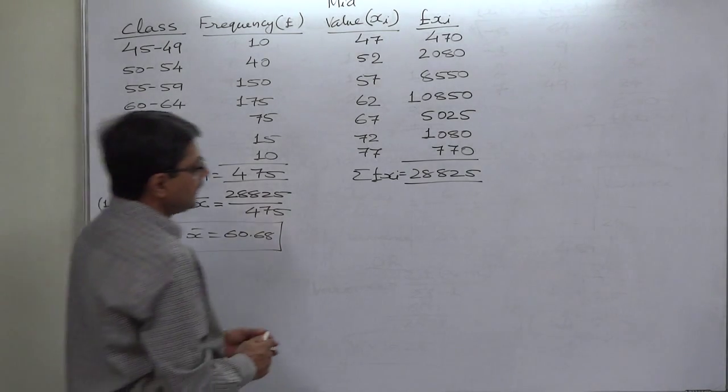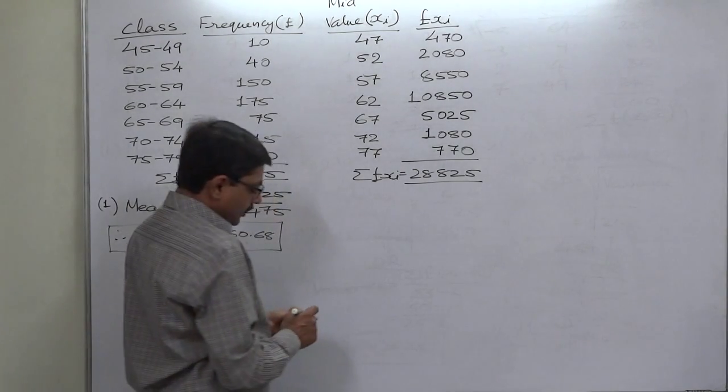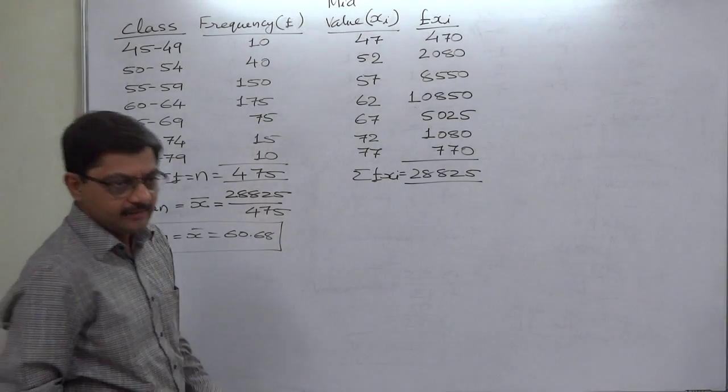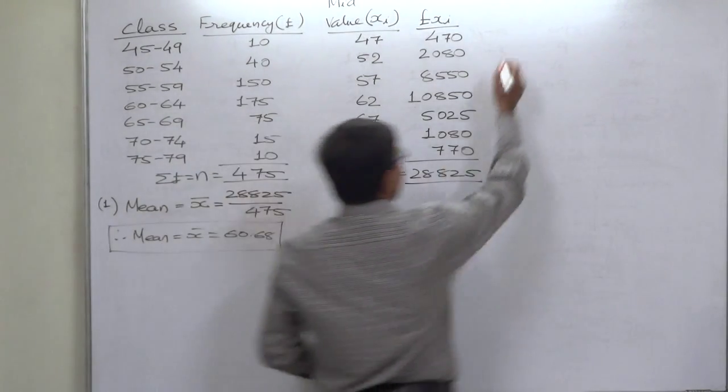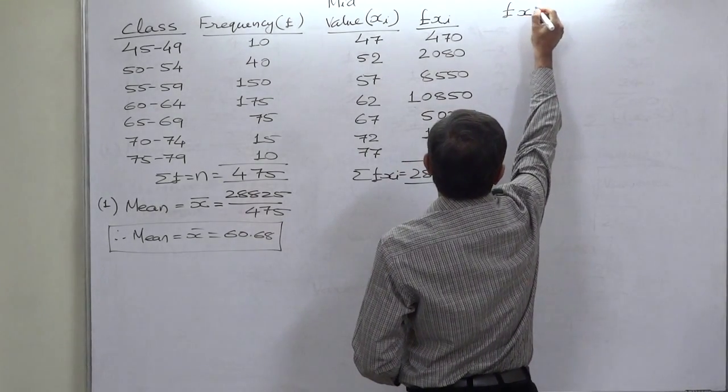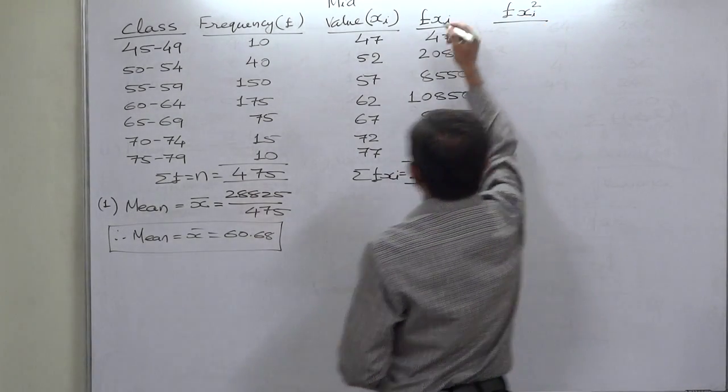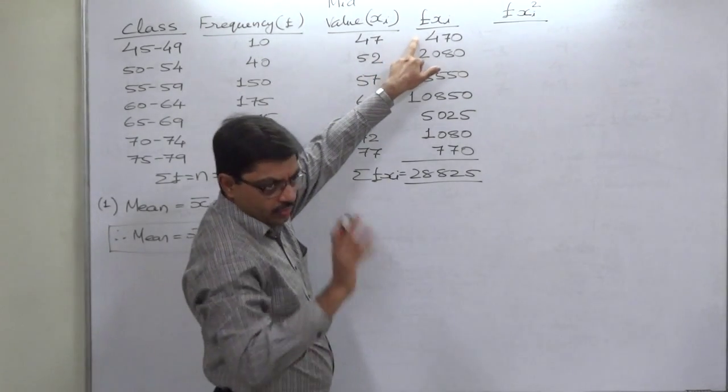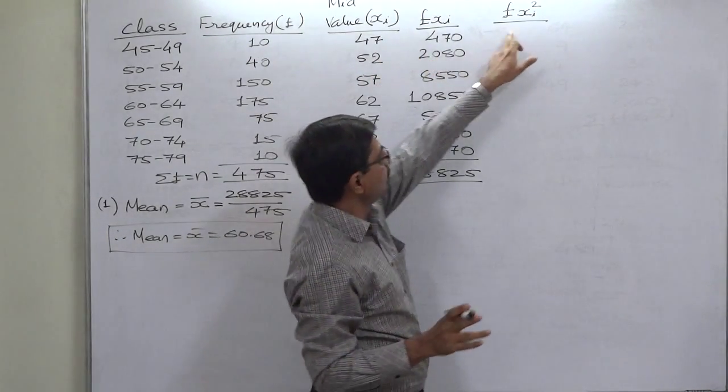Then we can use the formula of x square. And ultimately, we need fx square, f into x square. The square of x only, not the square of fx the whole square.